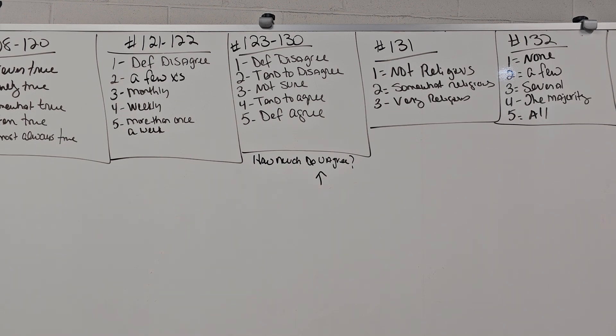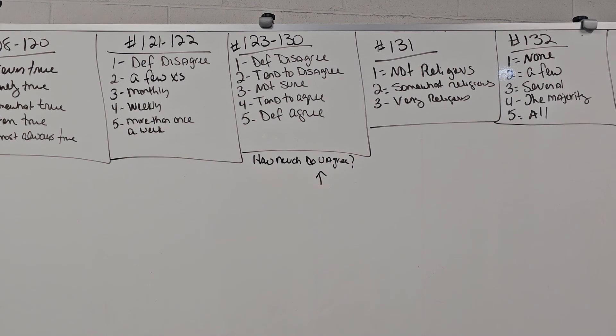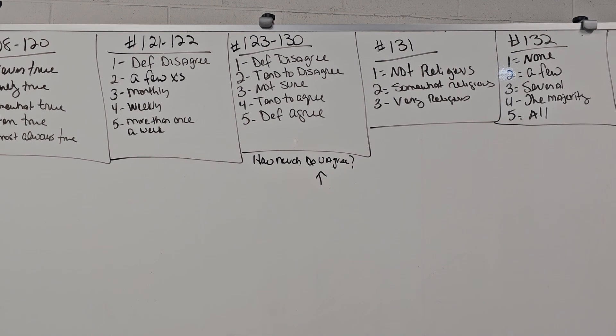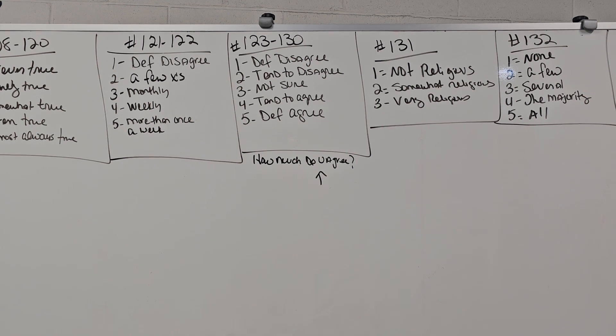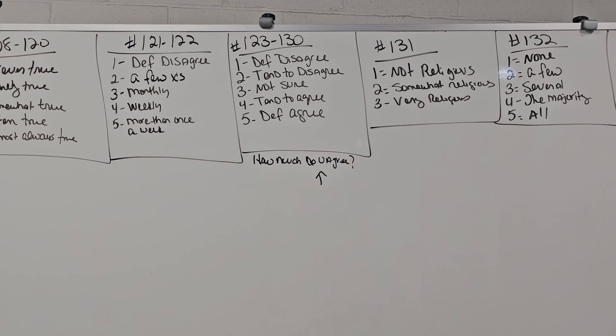134 I want you to write down your age group. Are you 18 through 22, or 23 through 30, 31 through 40, 41 through 50, 51 through 60, or 61 and over. 135 how long have you been a Christian? One less than a year, 133 equals one to three years, three equals four to five years, four is six to ten years, five is eleven to twenty years, six is more than twenty years.